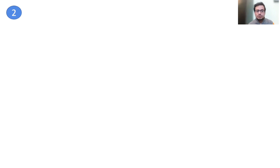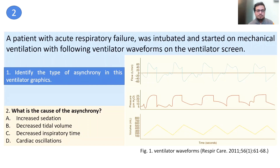Let's move to question number two. A patient with acute respiratory failure was intubated and started on mechanical ventilation with the following ventilator waveforms on the ventilator screen. Identify the type of asynchrony. What is the cause of the asynchrony? Options: A) increased sedation, B) decreased tidal volume, C) decreased expiratory time, or D) cardiac oscillations.